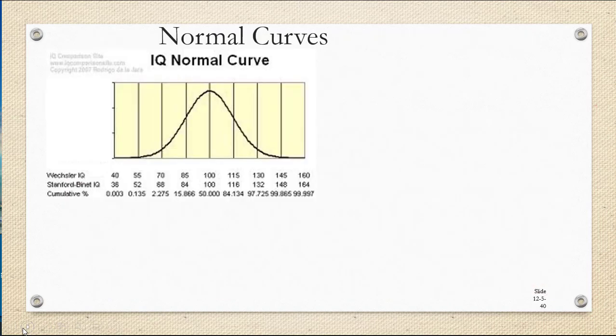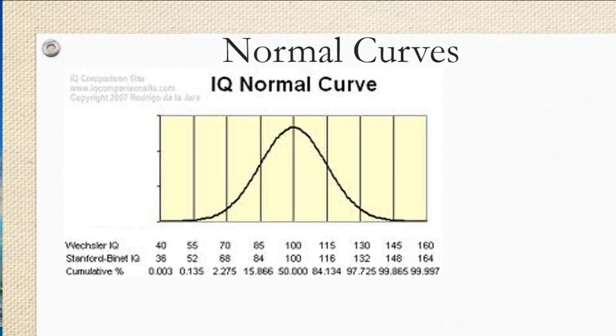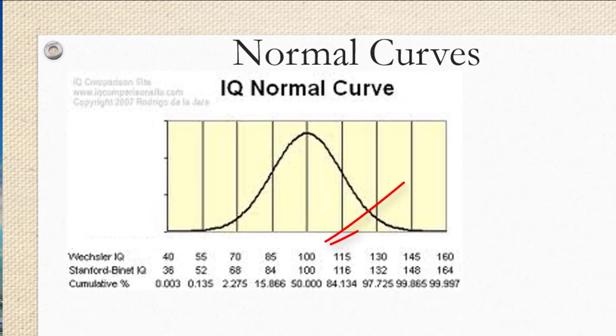One example of where we see a normal distribution is in IQ scores. In this graph, we can see that the mean IQ score is 100, and that's the score that occurs the most in the distribution. So it's also the mode.